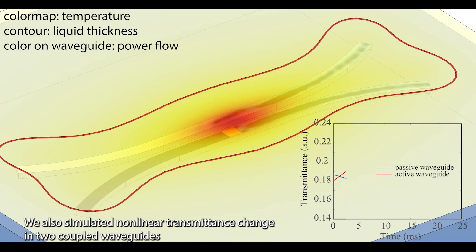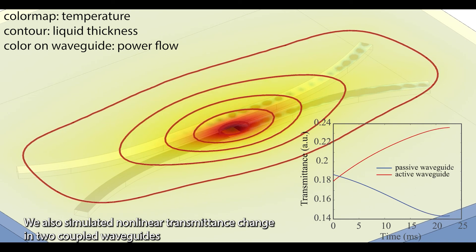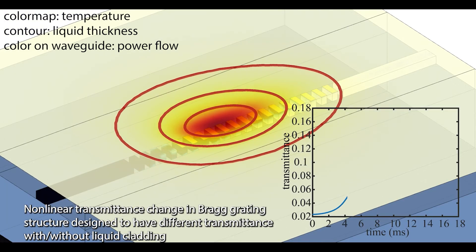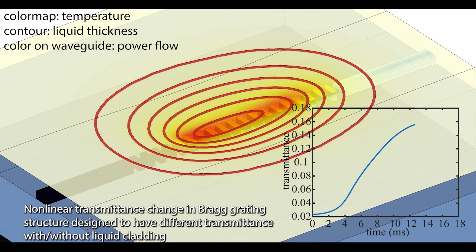We also simulated nonlinear transmittance change in two coupled waveguides, like here, and nonlinear transmittance change in Bragg grating structures designed to have different transmittance with or without liquid cladding.